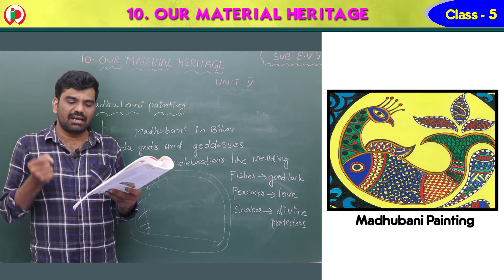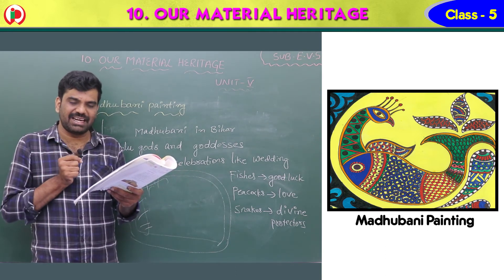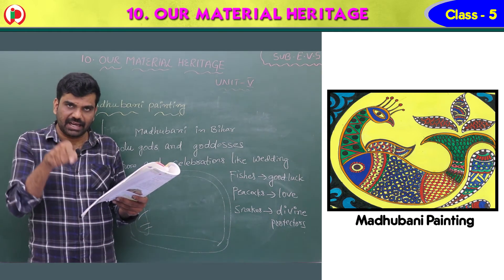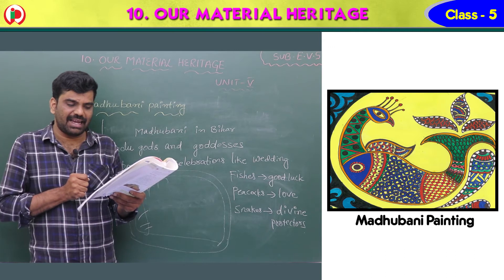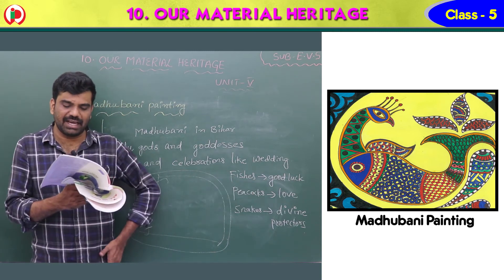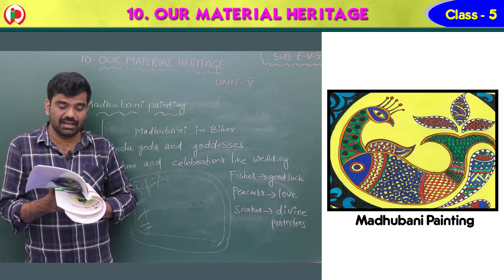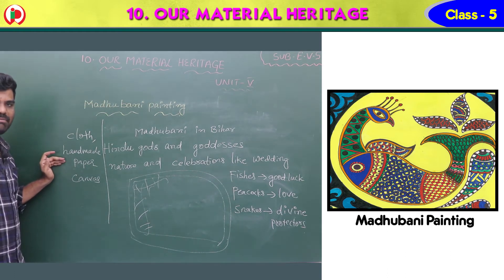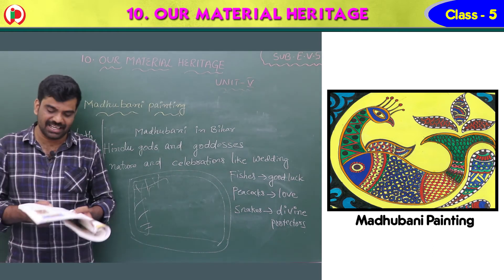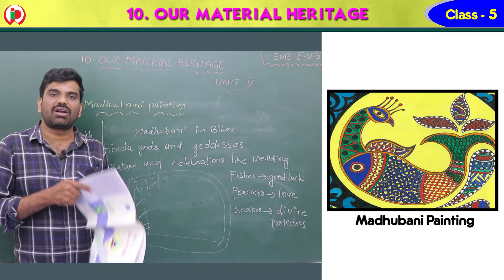Madhubani paintings are named after the town Madhubani in Bihar. The themes mainly represent Hindu gods, goddesses, nature, and celebrations like weddings. They are decorated with double line and floral patterns. The eyes of human figures are shown as big. Fishes symbolize good luck, peacocks for love, and snakes are the divine protectors. These paintings were earlier made to decorate mud walls of houses; now they are made on cloth, handmade paper, and canvas, using rice paste, vegetable colors, and bamboo sticks covered with cotton as brushes.